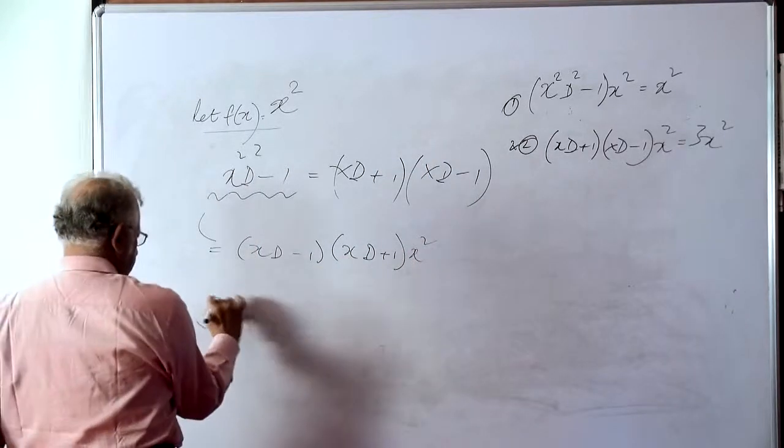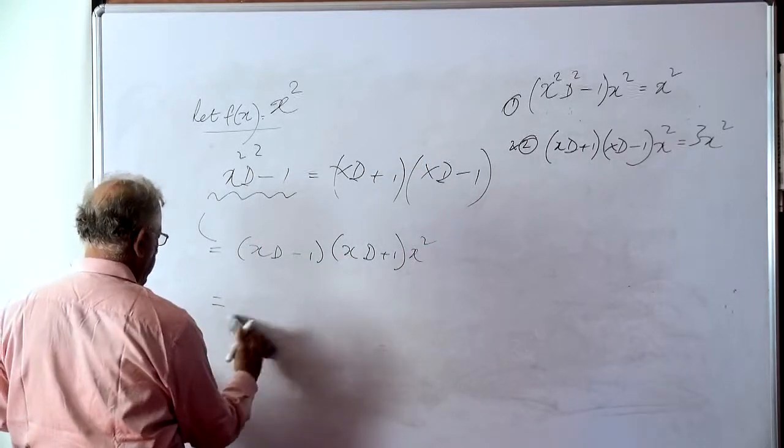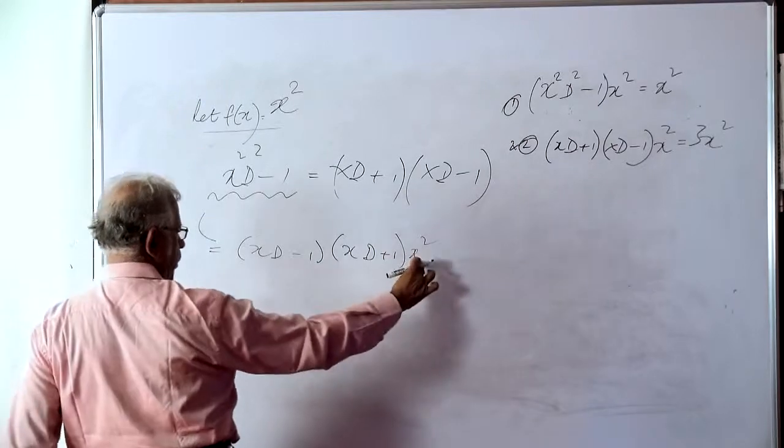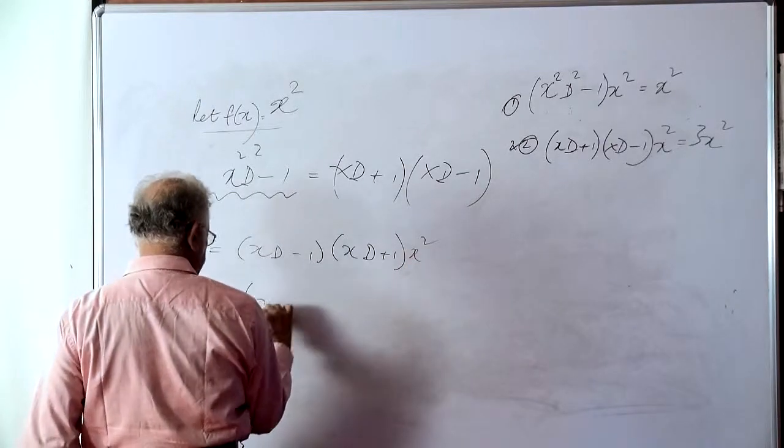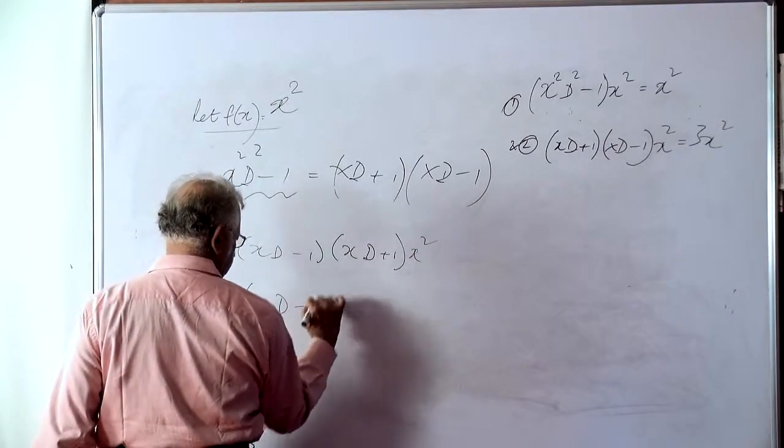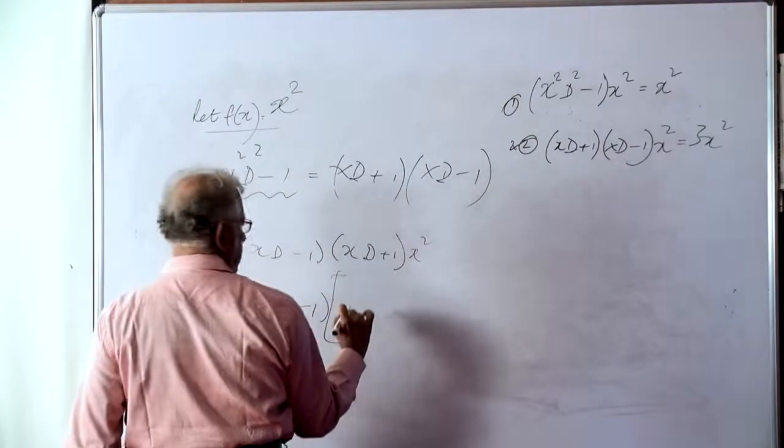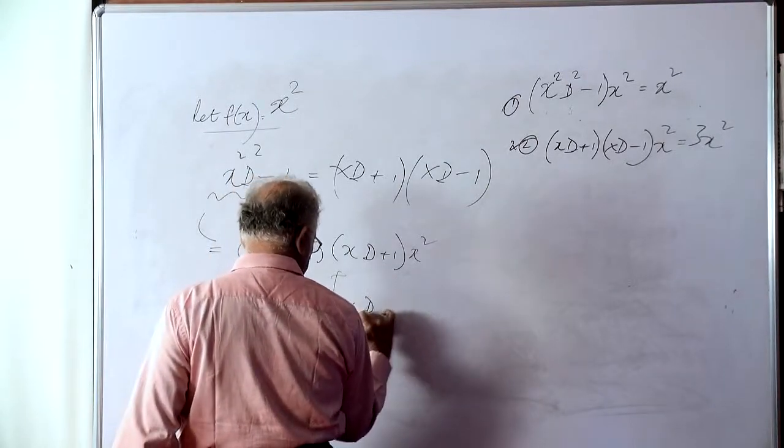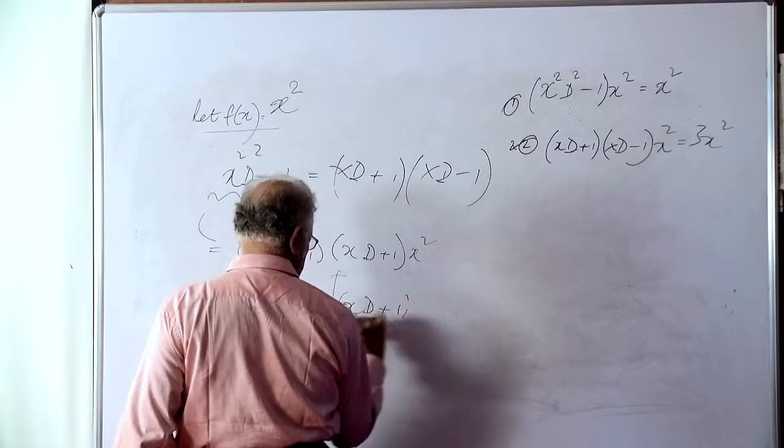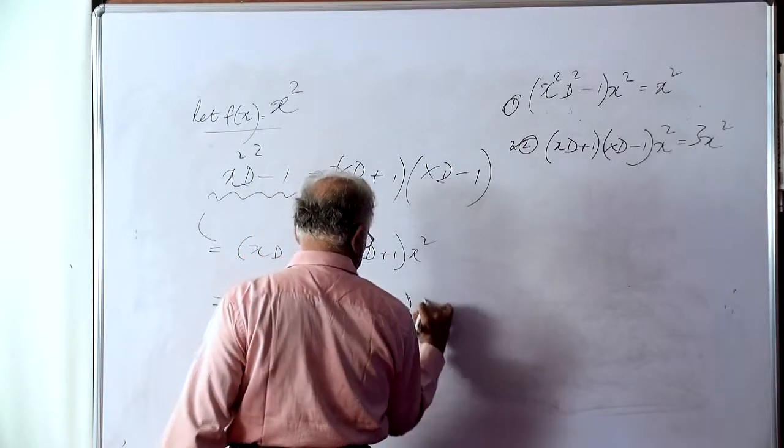The meaning of this is, first we will take xd plus 1 operating on x squared and then operate xd minus 1 on xd plus 1 operating on x squared.